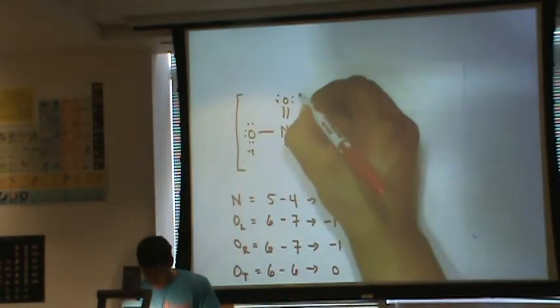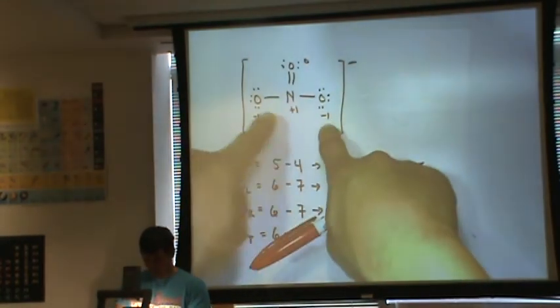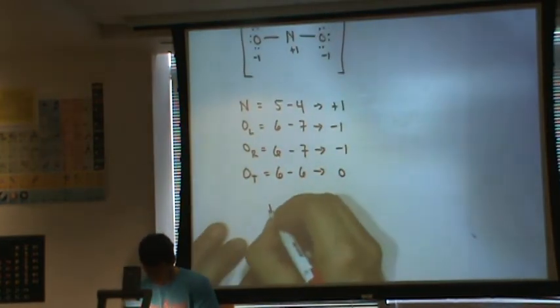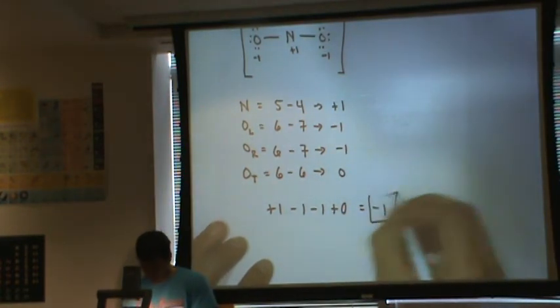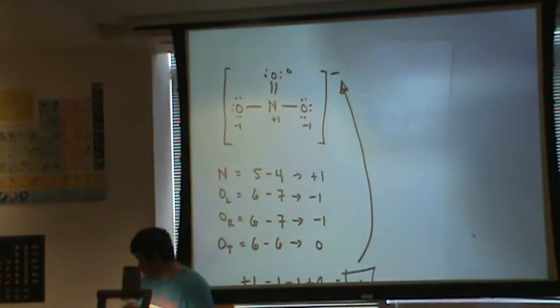So if I were to add these formal charges together, plus one, minus one, minus one, plus zero. This is equal to minus one, which, again, is the overall charge of the molecule.